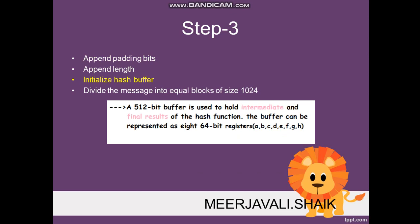Step three is to initialize the hash buffer. The hash buffer is used to store the final result and intermediate results. As the hash algorithm generates a fixed hash value, that value is stored in the hash buffer. Initially, we must initialize this hash buffer with fixed values. The 512-bit buffer is divided into eight 64-bit registers named a, b, c, d, e, f, g, and h.